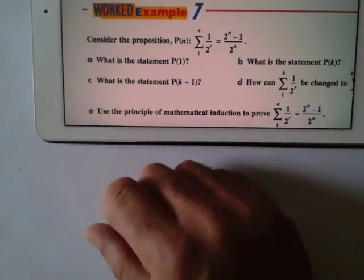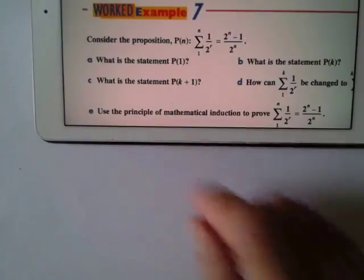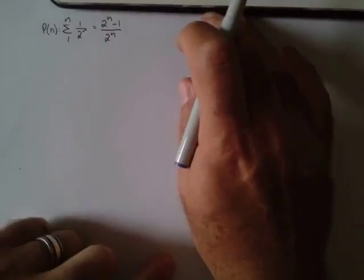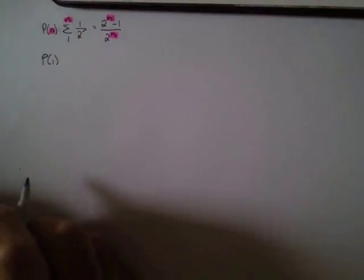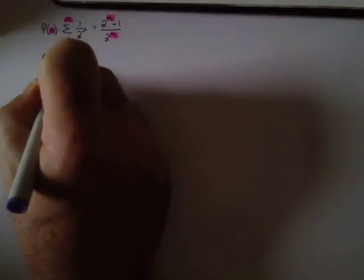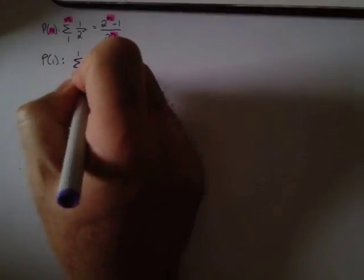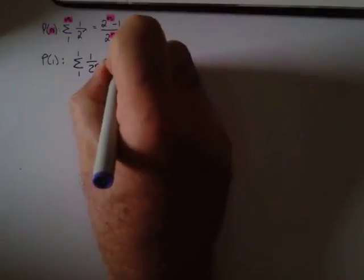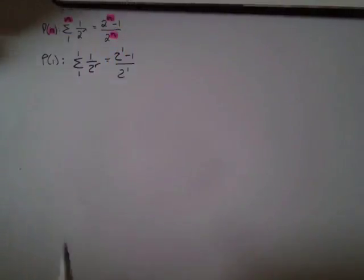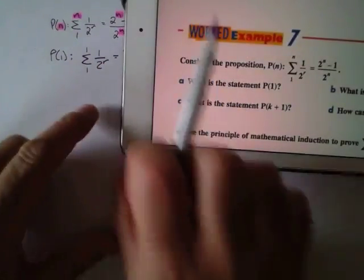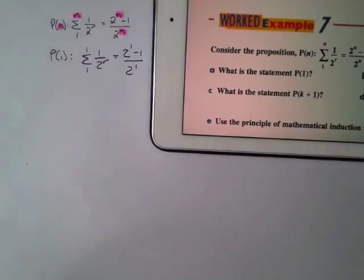The first question is: what is the statement when N equals 1? All I'm going to do is, in the place of N, I'm going to put a 1. So I'm going to say this equals, when N is 1, I substitute 1 in there. So I have the sum from R=1 to 1 of 1 over 2^R, which equals 2^1 minus 1 over 2^1. The question was what is the statement, so that is the statement — I don't have to calculate anything. That is part A done.